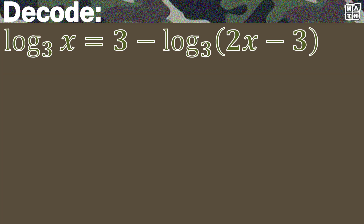It's the value of x that we are to decode for this given logarithmic equation. We have the logarithm of x to the base of 3 is equal to 3 minus the logarithm of the quantity 2x minus 3 to the base 3.